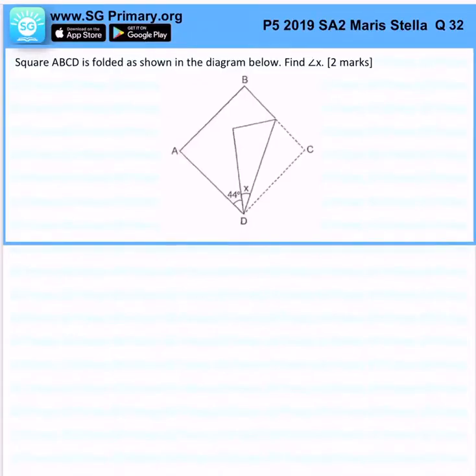Square ABCD is folded as shown in the diagram below. Find angle X. Now, you would know that this is a 90 degree, right? Angle ADC is a right angle.